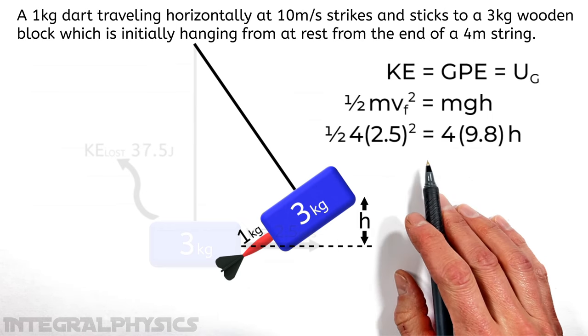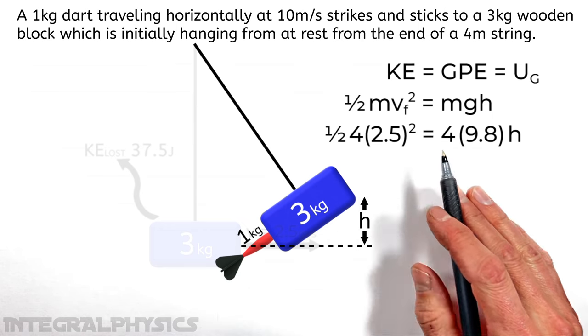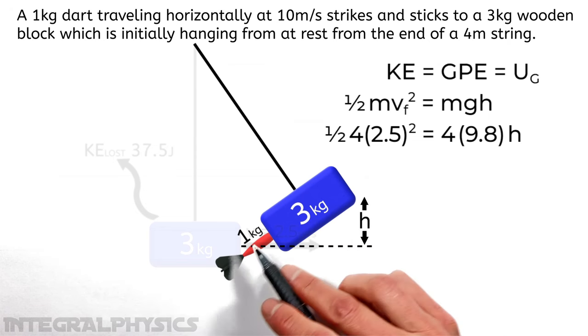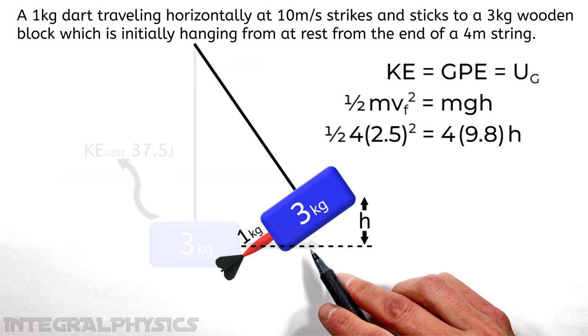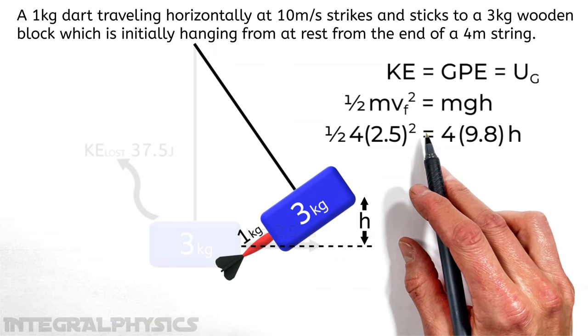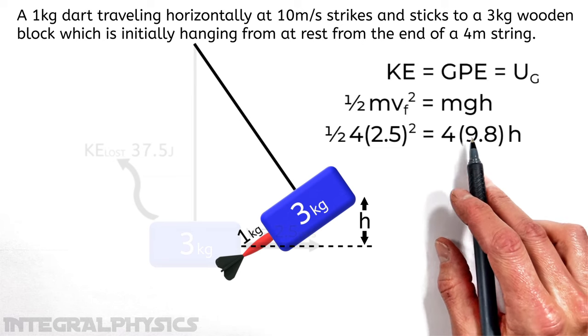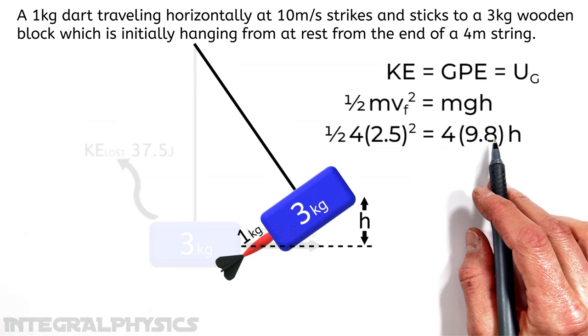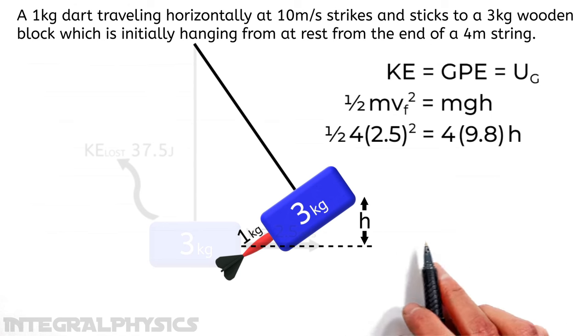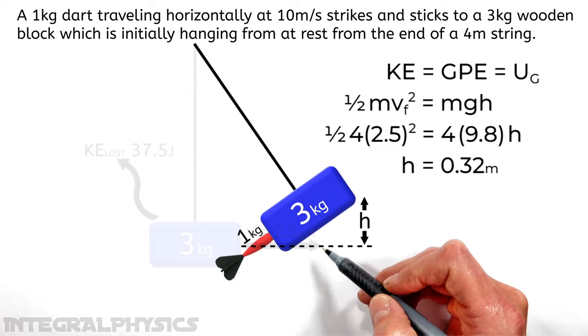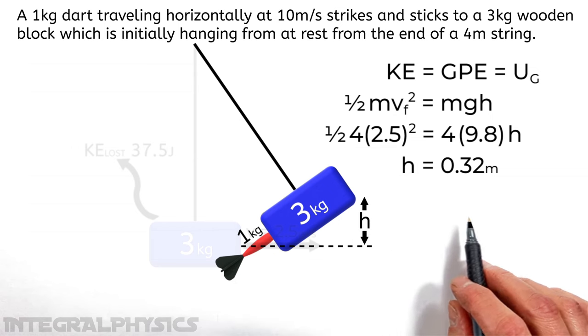So looking over here, we're going to have 1 half times 4. Again, that's the total mass, which is swinging upward, multiplied by the velocity of the dart and block just after this collision, which is 2.5 meters per second, and that's squared. We're going to set that equal to the total mass, still 4, multiplied by 9.8 times h. And working this out, we find that h, the increase in height of the dart and block as they swing upward, is 0.32 meters.